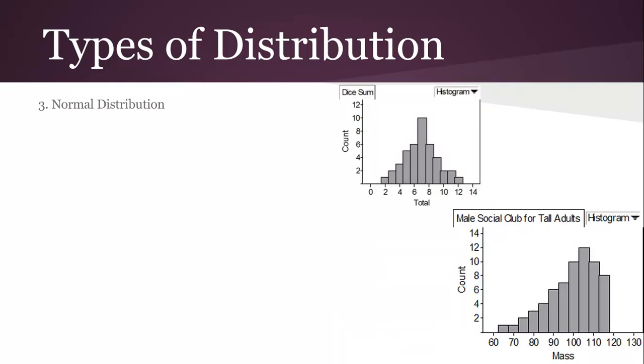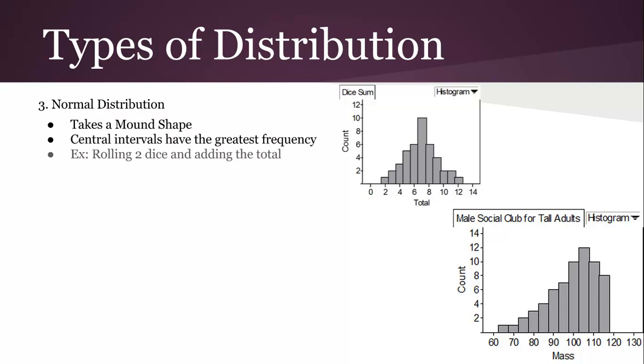You can also have a normal distribution, and so we've studied the normal distribution already. It's also like a mound shape. That's another word for it, because normal is really a specific type but you can also say mound shape. Central intervals have the greatest frequency. And again, although it's discrete, rolling two dice and adding the total would have a mound shape. I just wanted to demonstrate what a mound shape would look like. And so the easiest way to do that is to do dice sum.